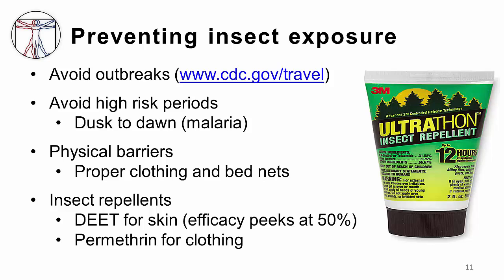How do we prevent insect exposures? One of the most important things is to try to avoid high-risk areas. The CDC travel website is a good resource to identify areas having outbreaks, such as dengue fever. If you could avoid an area having an outbreak, that's probably the best approach. When you're in an area with risk, avoid high-risk periods — in malaria-endemic regions, dusk to dawn is high risk, so use protective strategies during that time. Use physical barriers such as proper clothing and bed nets. Use insect repellent, specifically DEET for the skin — a long-acting DEET product is helpful so patients don't have to apply it as frequently. Using permethrin on clothing or bed nets can also help avoid insect exposure.